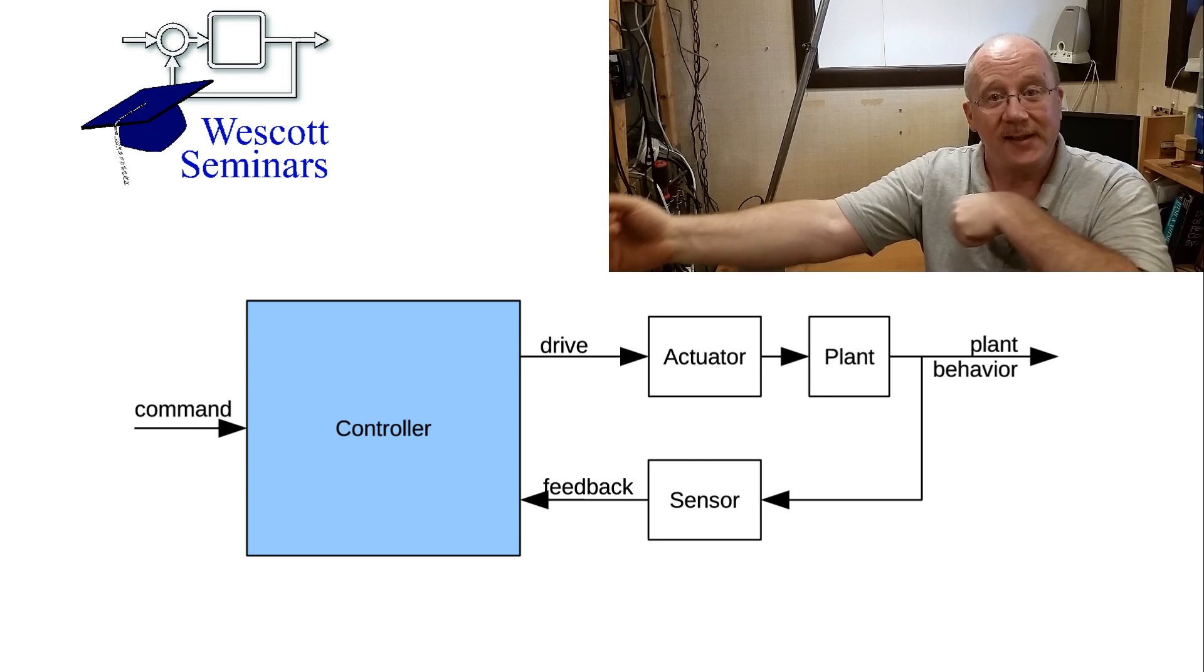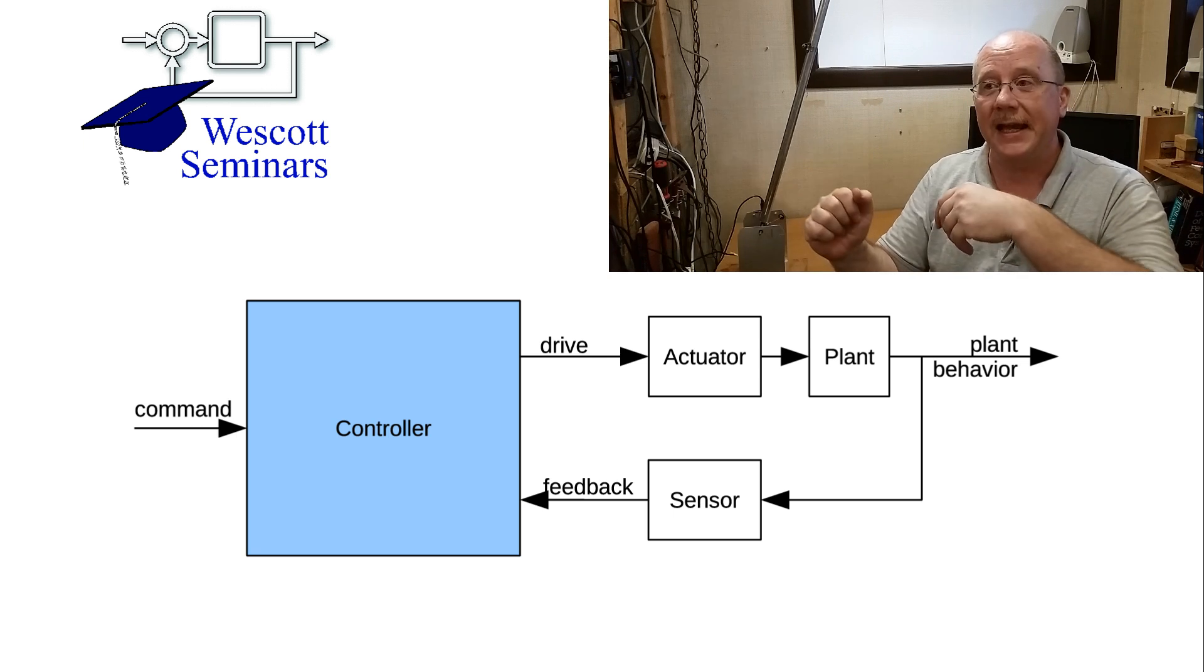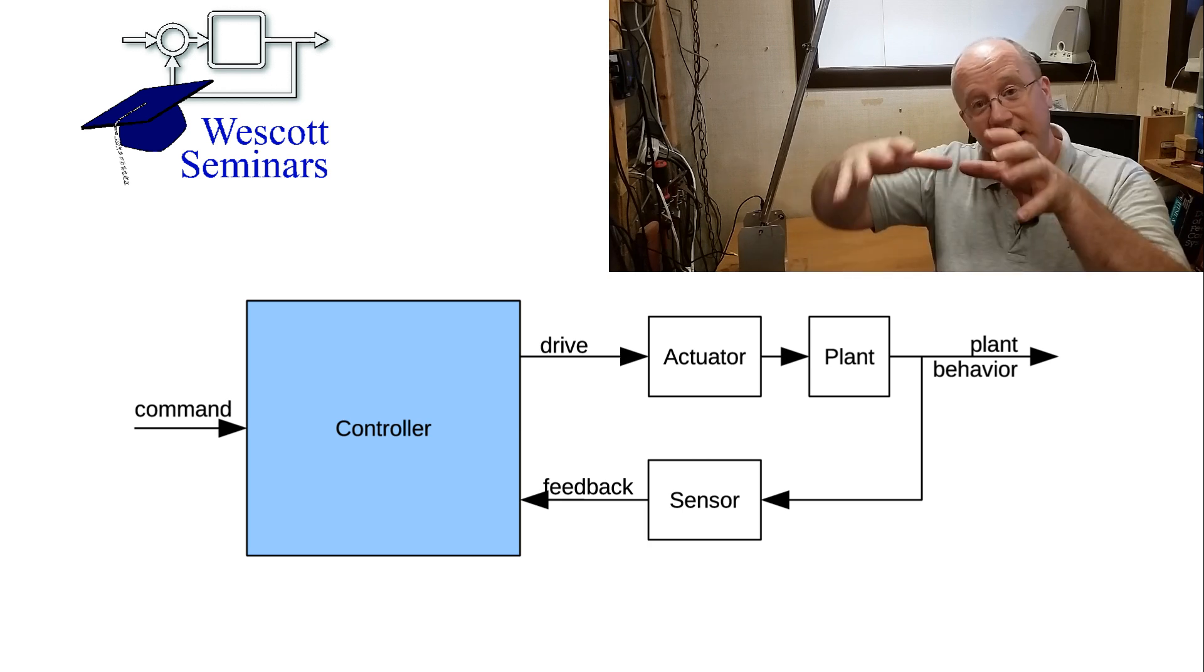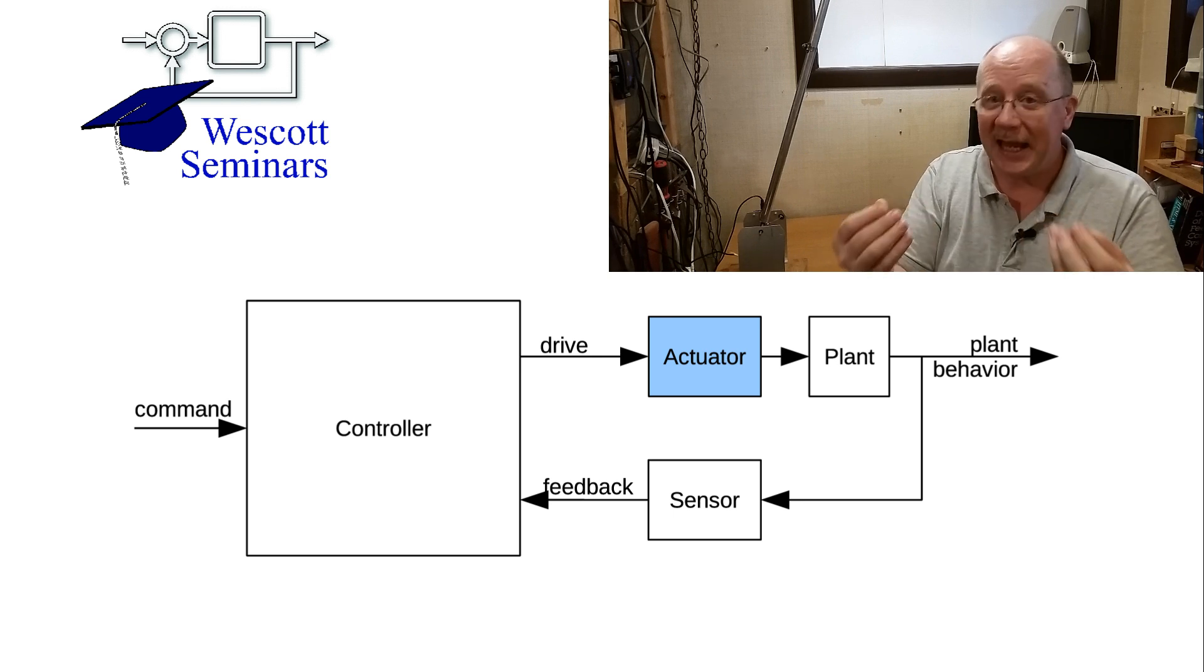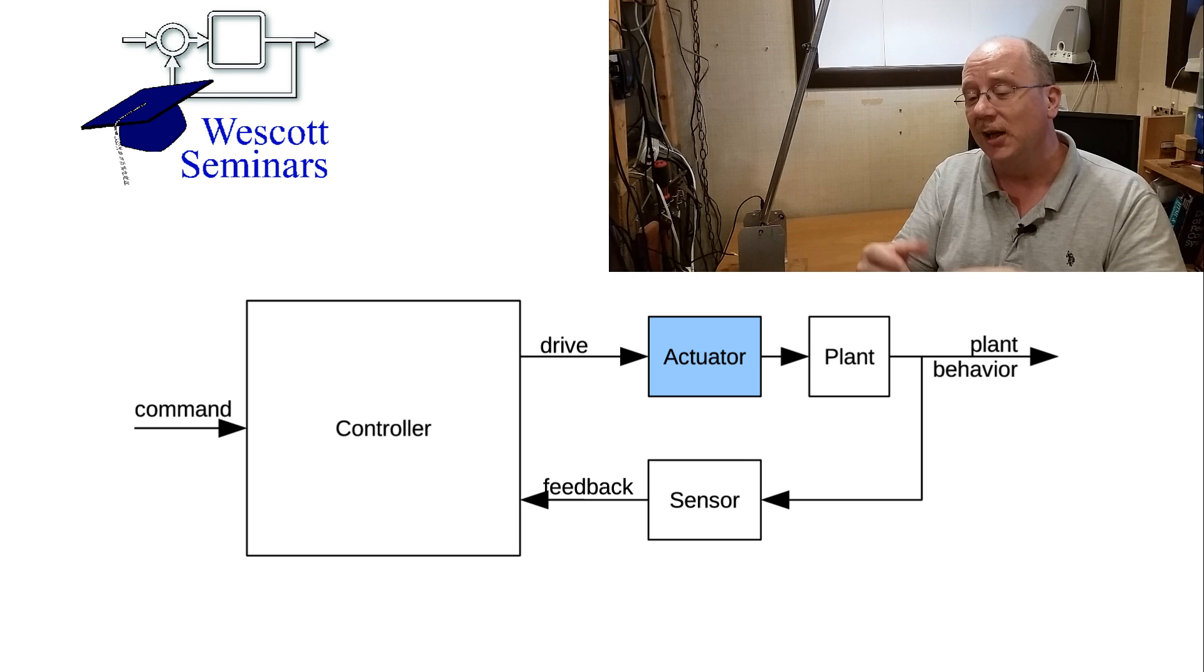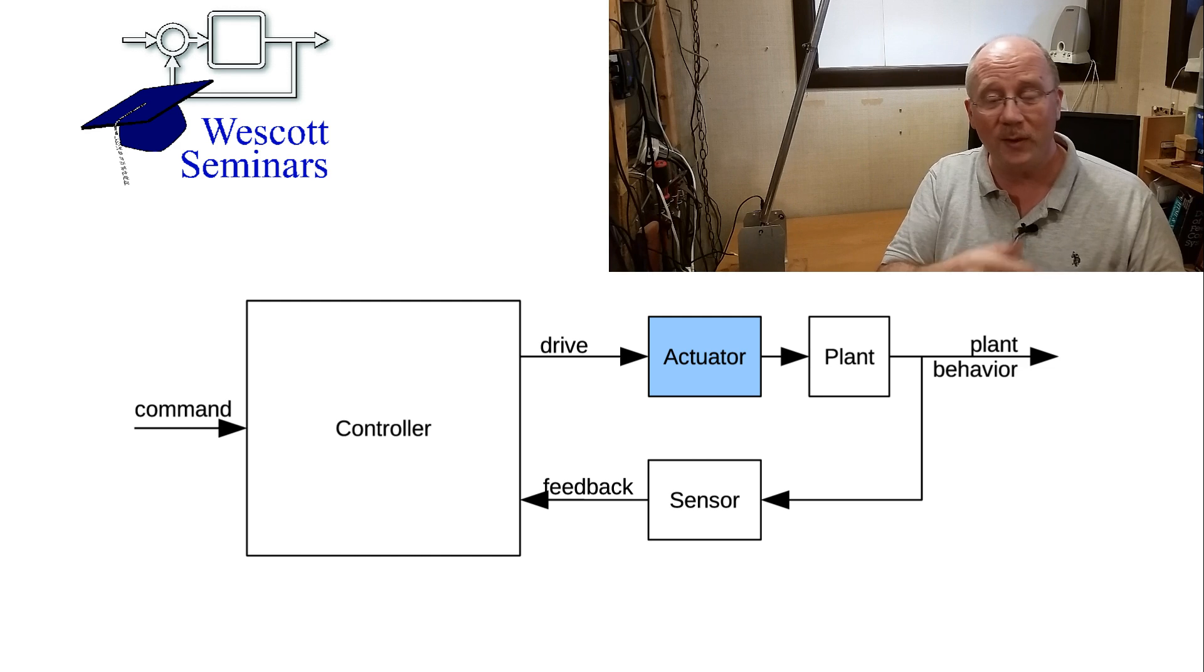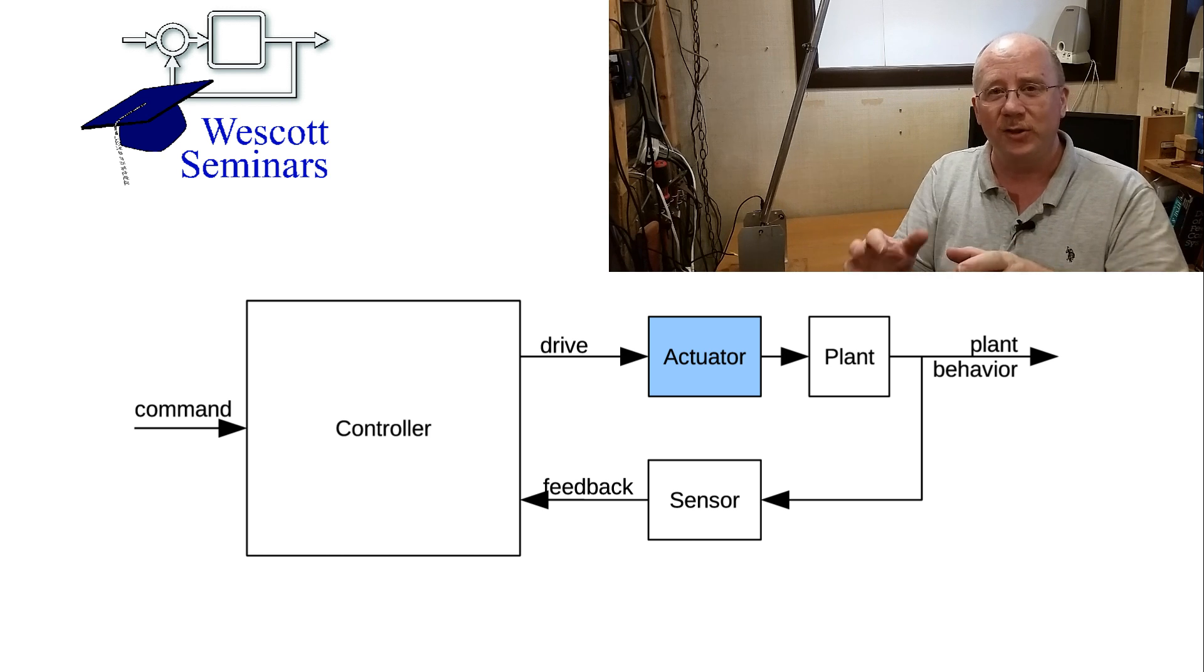And that controller gets input from the outside world. It gets commands, and it gets input from the sensor, which I'll talk about later, and it sends output to the actuator. Now the actuator is, here again, you can be fluid with how you do your definitions. Just be clear if you're writing a document for someone else what you mean. The actuator could be a motor, or it could be an amplifier going to a motor, or it could be a heater coil, or whatever it is that you need to shove the real world around. That's your actuator.